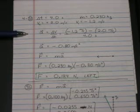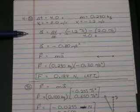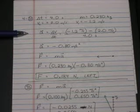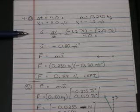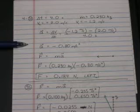So acceleration vector is change in velocity over change in time. The difference in velocity is negative 1.2 minus 2.0. And we get an acceleration vector of negative 0.80 meters per second squared.